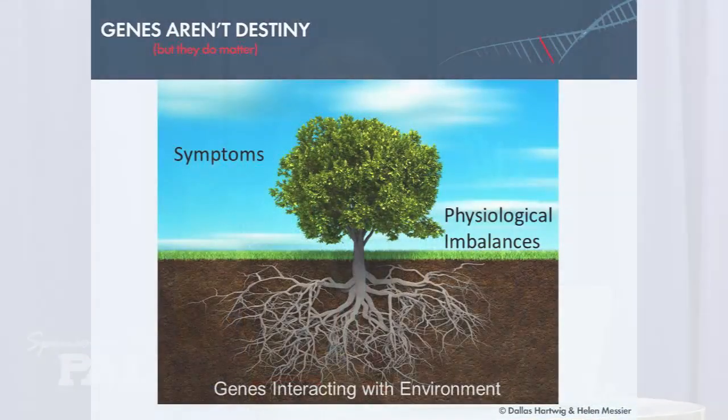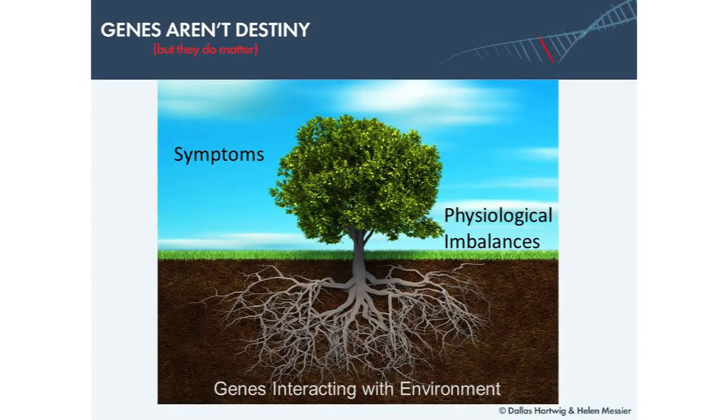I like to think of — this is a functional medicine analogy — think of an analogy of a tree. We're all like this tree, where what we see is the leaves. And our leaves can be robust and green and healthy and look really good, or our leaves can be yellow and shriveling and starting to fall off.